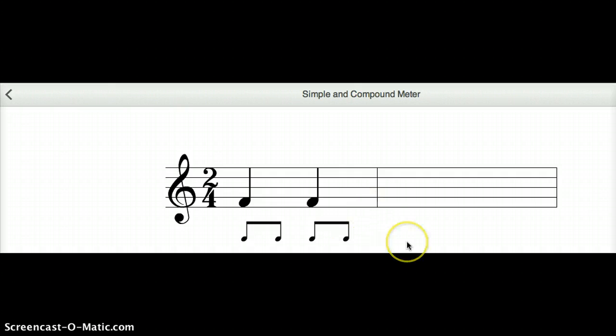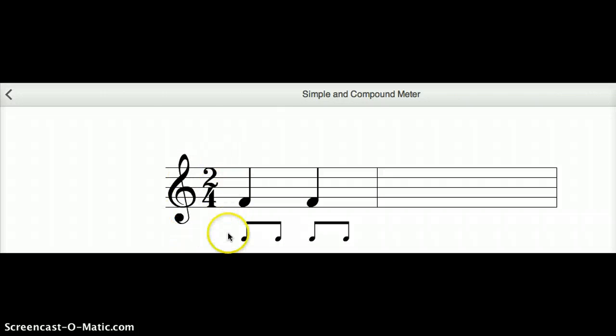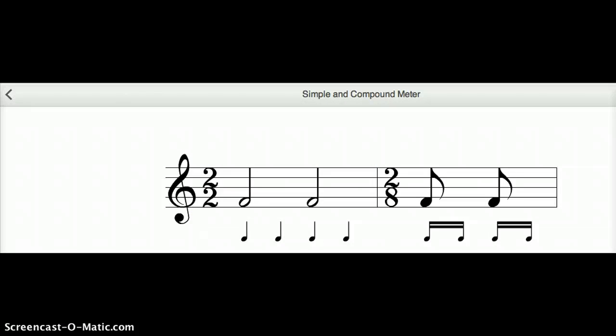Let's go to the second word now: duple, triple, or quadruple. This meter here is simple because it's broken into twos, and duple because there are two big beats in the bar. Another example of simple duple is 2/2. As you can see, they're broken into twos, and 2/8 as well—two groups of two.